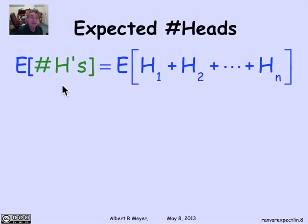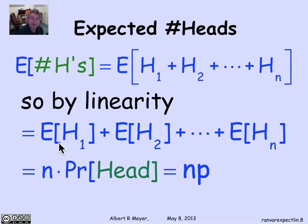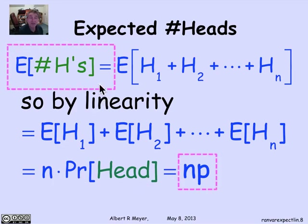The expectation of the number of heads is the expectation of this sum. By linearity, the expectation of the sum is the sum of the expectations: expectation of h_1 plus expectation of h_2 through expectation of h_n. Since the flips are independent, each expectation equals the probability of a head. There are n of them, so the total is n times the probability of a head, or np — a formula we derived two other ways, now falling out very elegantly by expressing the number of heads as a sum of indicators.